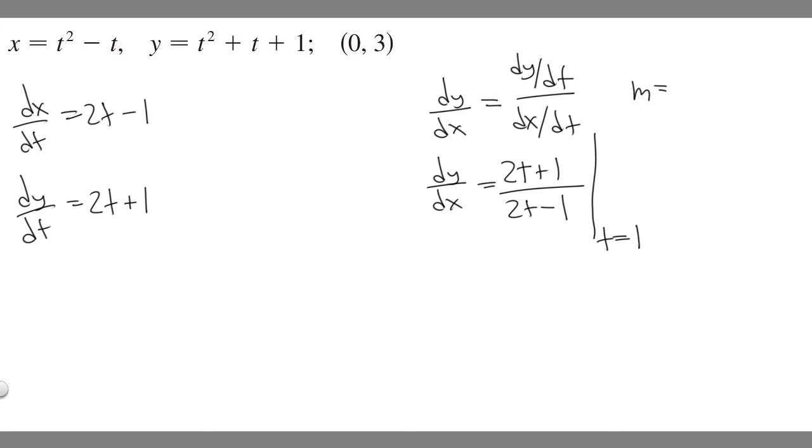So t equals 1. If that's the case, we can plug it in to find the slope. So 2(1) + 1 over 2(1) - 1. 2 times 1 is 2 plus 1 is 3. 2 times 1 is 2 minus 1 is 1. So it's going to be equal to 3. This is our slope, m.